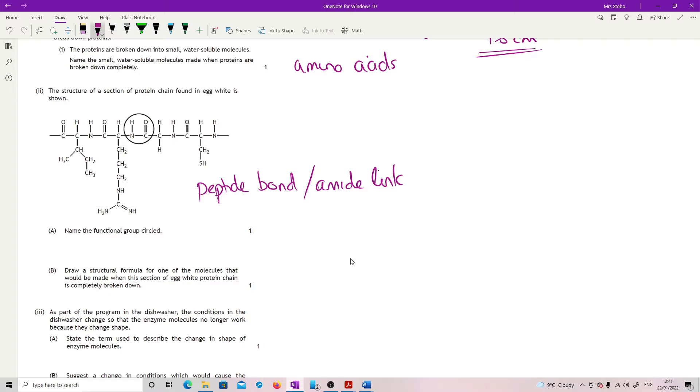Draw a structural formula for one of the molecules that would be made from this breakdown. So we're looking at basically each of the amino acids. You could do this one, you could do this one, you could do this one, or you could do this one. All you need to do is re-establish at one end, the C double bond O, bond O, bond H, and at the other end, so this would be C bond H, and then whatever the R group is, you need to have your amine of your NH2.